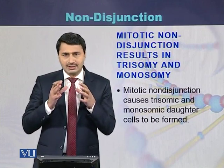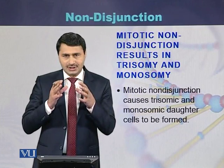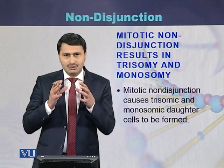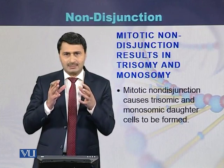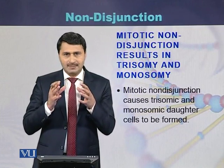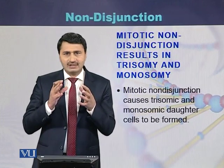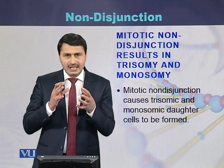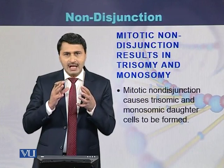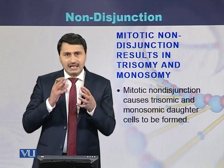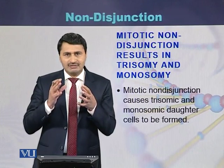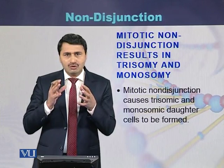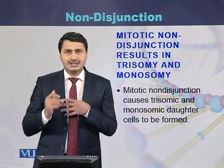Mitotic non-disjunction produces two types of cells: one of the cells will be trisomic in nature while the other cell will be monosomic in nature.